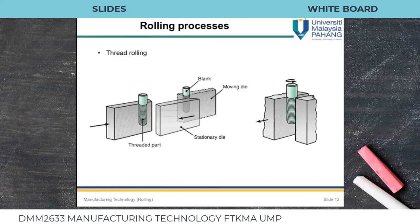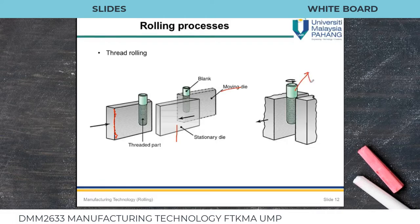Thread rolling is a cold forming process by which straight or tapered threads are formed on round rods or wires. We have a round rod and two threaded dies — one stationary and one moving. When the rod is passed between these dies, the final product is a threaded screw. This is called the thread rolling process.